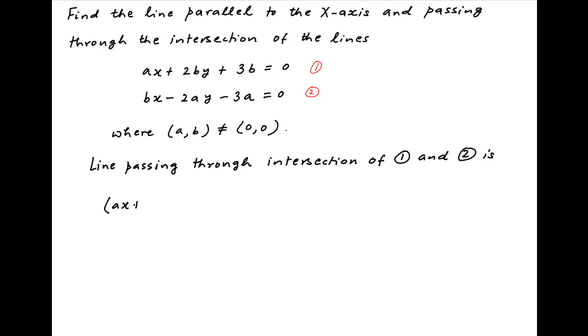ax plus 2by plus 3b plus a parameter lambda times bx minus 2ay minus 3a is equal to 0. Collecting the coefficients of x and y, we get a plus b lambda times x plus 2b minus 2a lambda times y plus 3b minus 3a lambda is equal to 0.